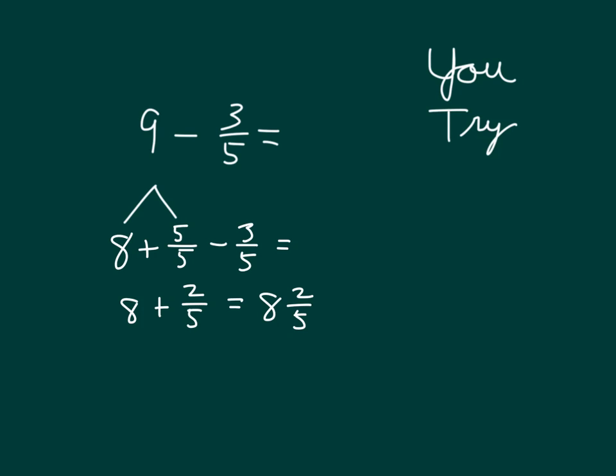Can you draw a number line showing this as well? Well, just draw in between the whole numbers, 8 and 9. Well, we started at 9, and we went back 3 fifths. So we better divide our number line into fifths. 1, 2, and 3. Meaning we subtracted 3 fifths to be able to get to 8 and 2 fifths.